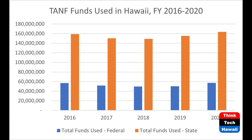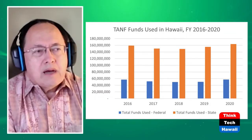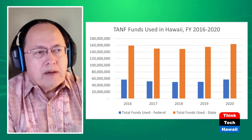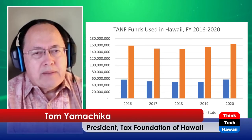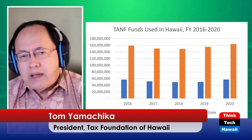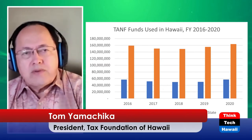Let me show you on a graph — graph number one — what we actually spend. On this graph, the blue represents the amount of federal money we spend, and the orange represents the amount of state money. The maintenance of effort level is around $150 million, and that's what we spend pretty much every year. We're authorized about $100 million a year from the federal government, and we can spend that money to further the goals of the federal program — and they're very broad goals.